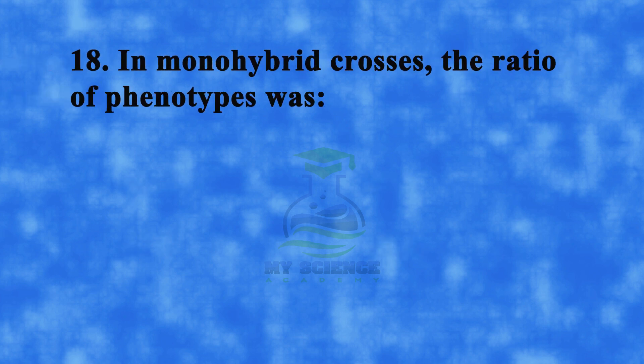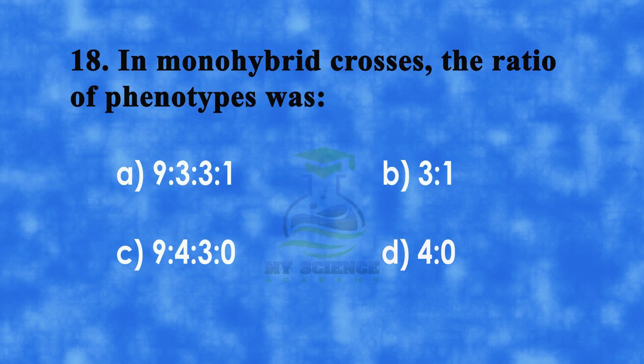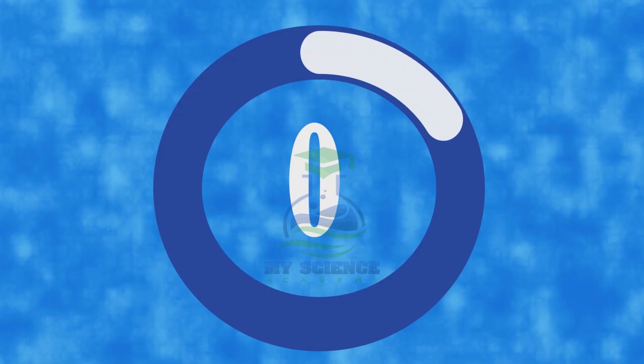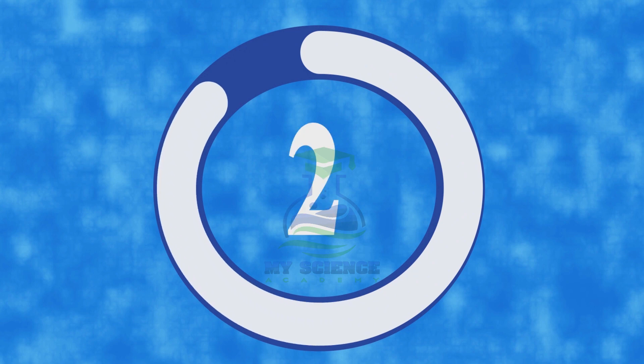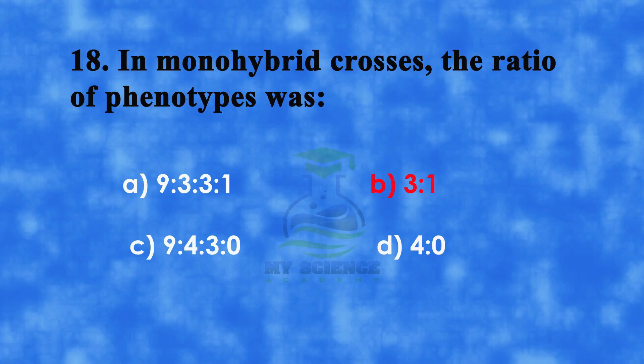Question 18: In monohybrid crosses, the phenotypic ratio is — A. 9:3:3:1, B. 3:1, C. 9:4:3:0, or D. 4:0. Correct answer is B. 3:1.